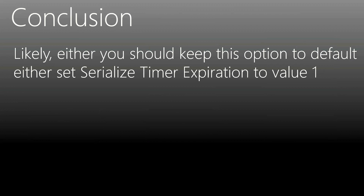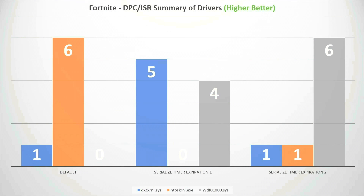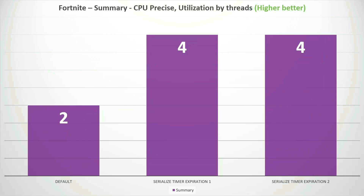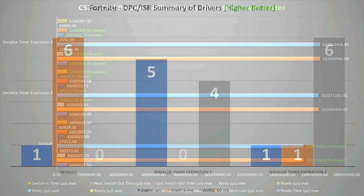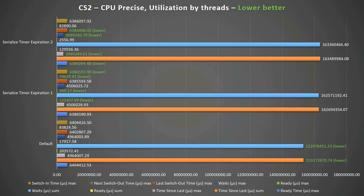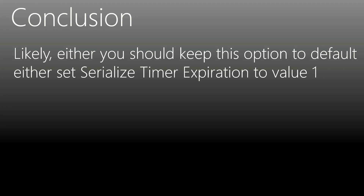The conclusion is: likely you should either keep this option at its default or set serialized timer expiration to value one. Across most tests, results are better with serialized timer expiration value one or by default. First, consider which driver you want to improve; second, check the CPU precise results and decide which value to set. If you care about the DPC/ISR kernel, set serialized timer expiration to one; if you care about other things, consider trying value two.